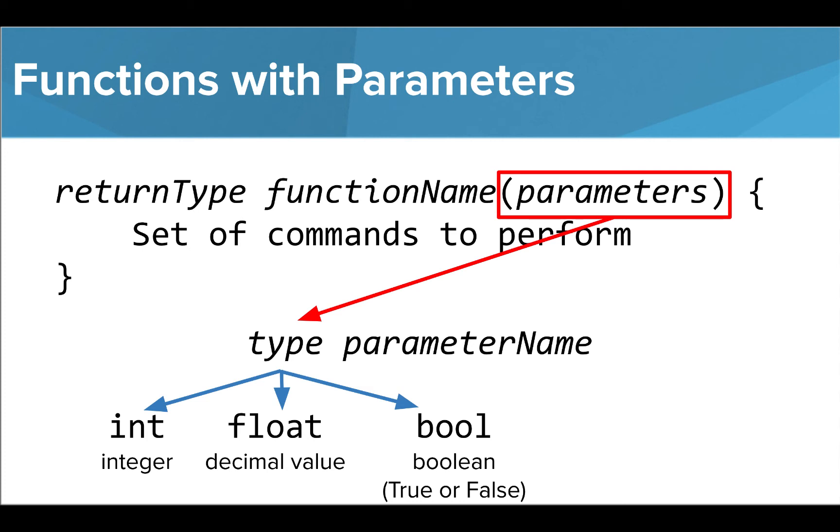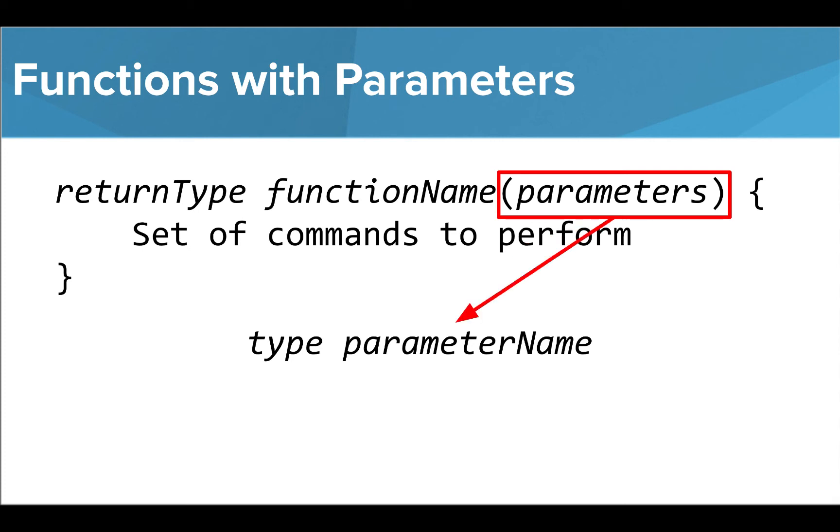In this class, we'll stick to using these three types: int, float, and bool. Then we write the name of our parameter using our naming rules.